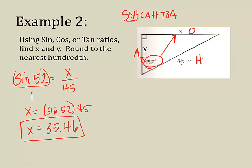Now, for y, let's look at what two sides I need. I need the adjacent and the hypotenuse. Look at your SOH CAH TOA. That is cosine. So I say the cosine of 52 equals the adjacent, which is y, over the hypotenuse.